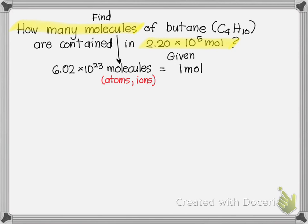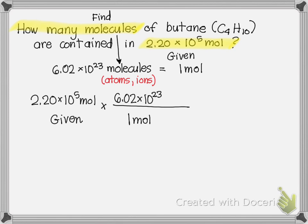We're given 2.20 × 10⁵ moles. And we're going to use Avogadro's number. So, we will put the 1 mole in the denominator so it will cancel, and the 6.02 × 10²³ molecules in the numerator.